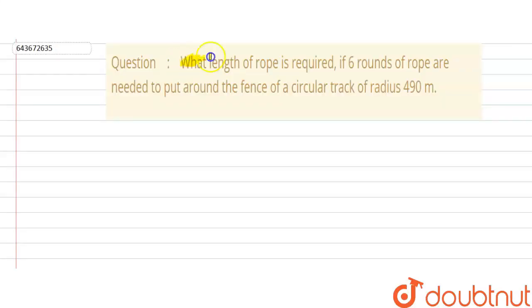In this question, we have to find what length of rope is required if 6 rounds of rope are needed to put around the fence of a circular track of radius 490 meters. We are given that there are total 6 rounds of rope required to put around the fence of a circular park.